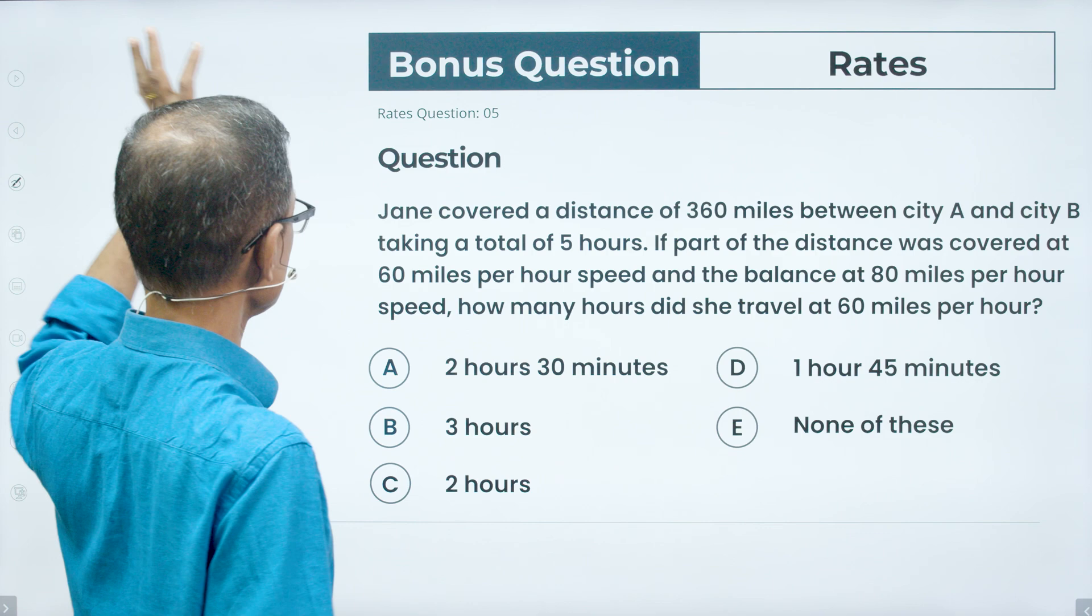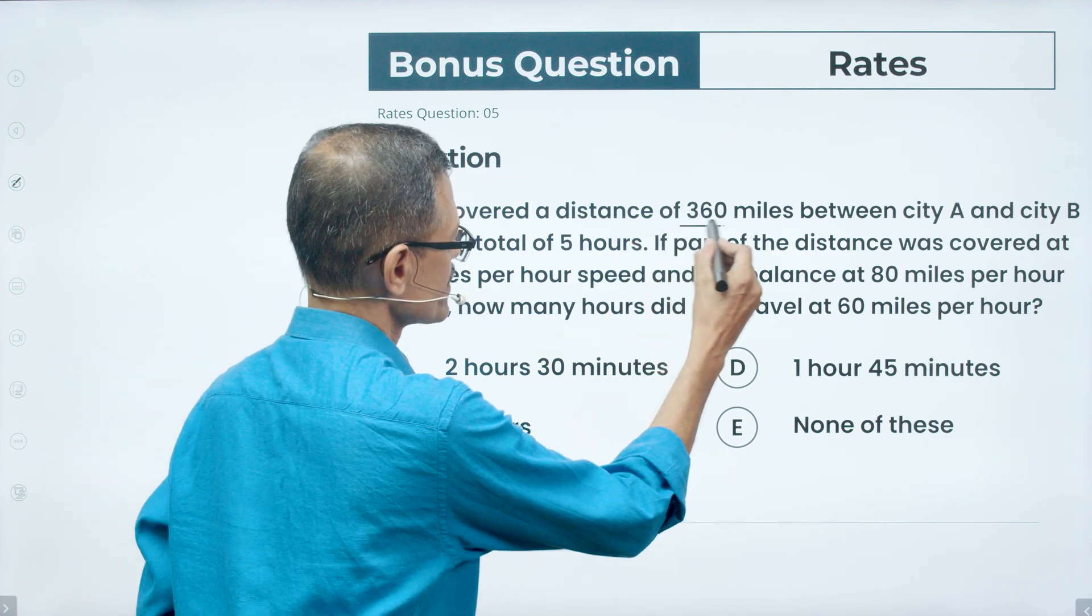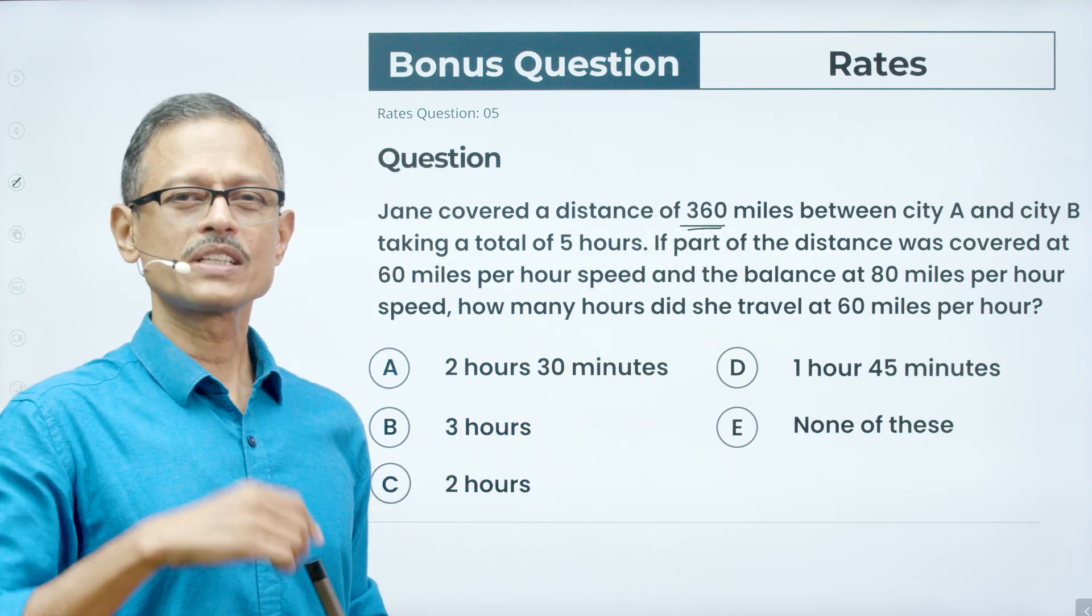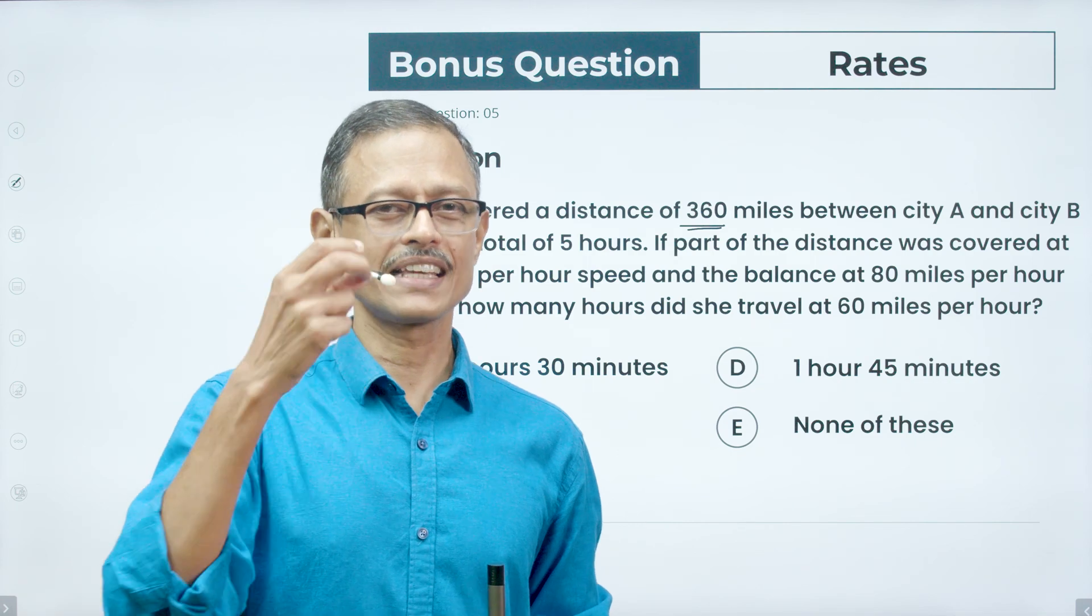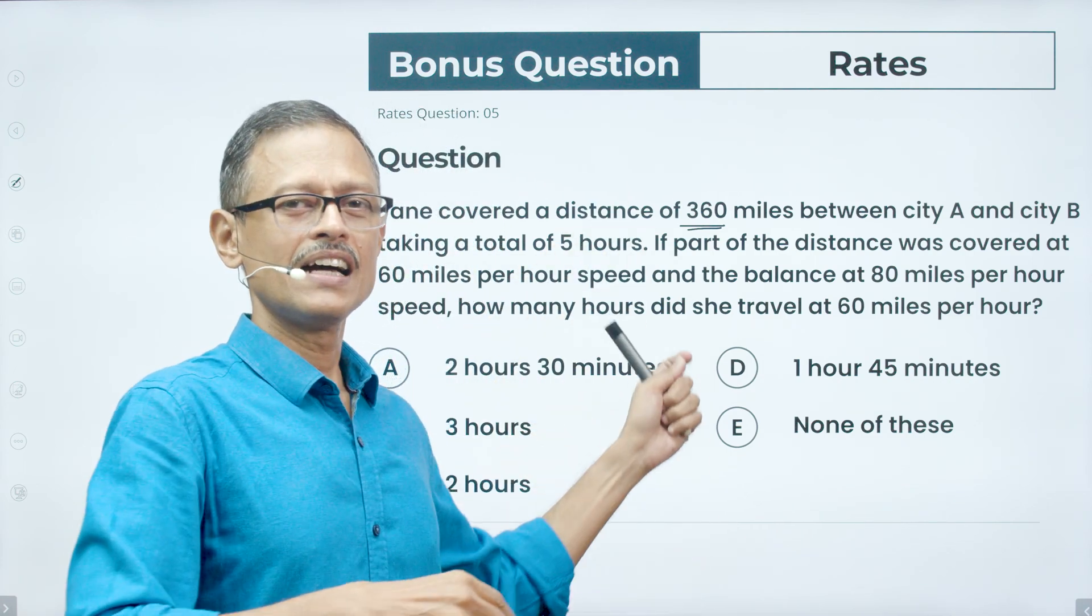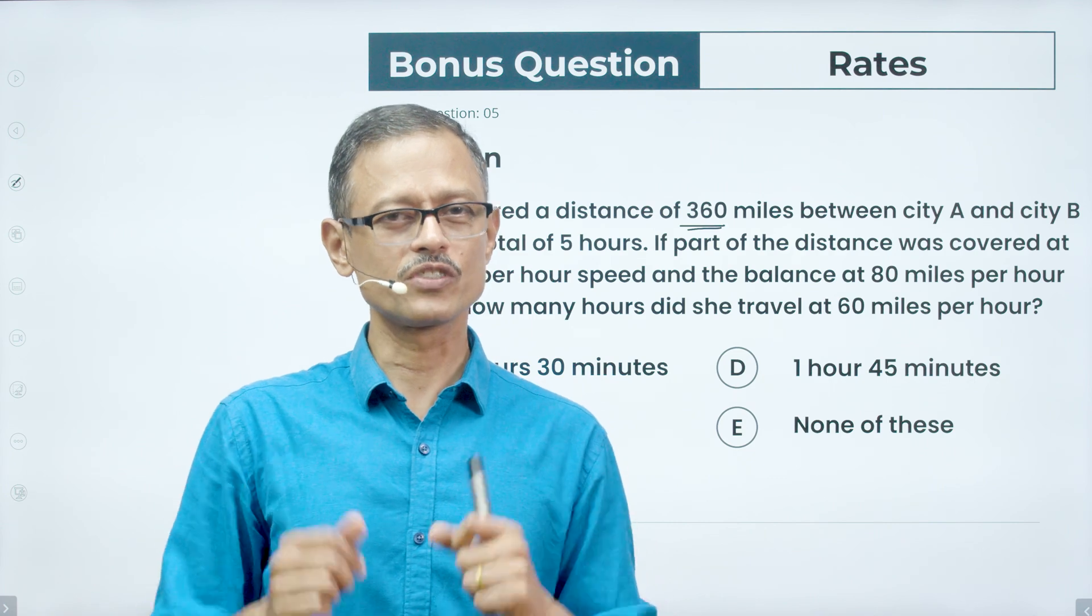The bonus question, I've not done much of a change. I've just tweaked this. I made this as 360 miles. So that I want you to try it using the second method which is the rule of allegation and try and arrive at the answer and post your answers to the comment section of this video.